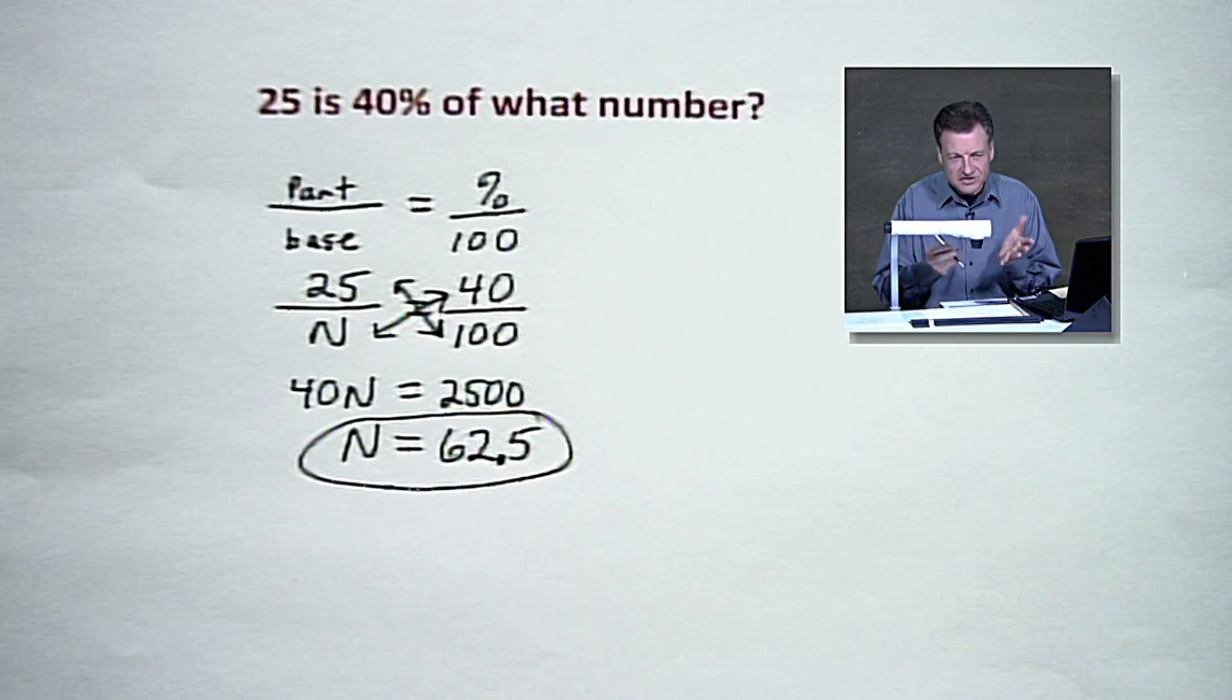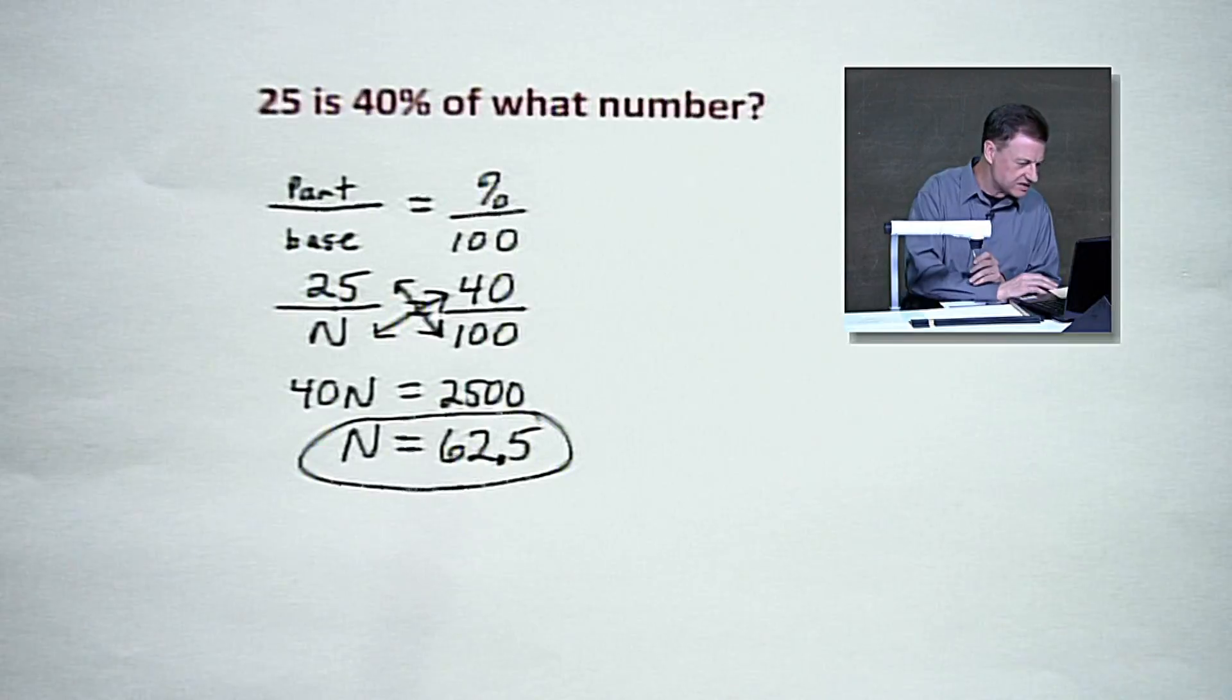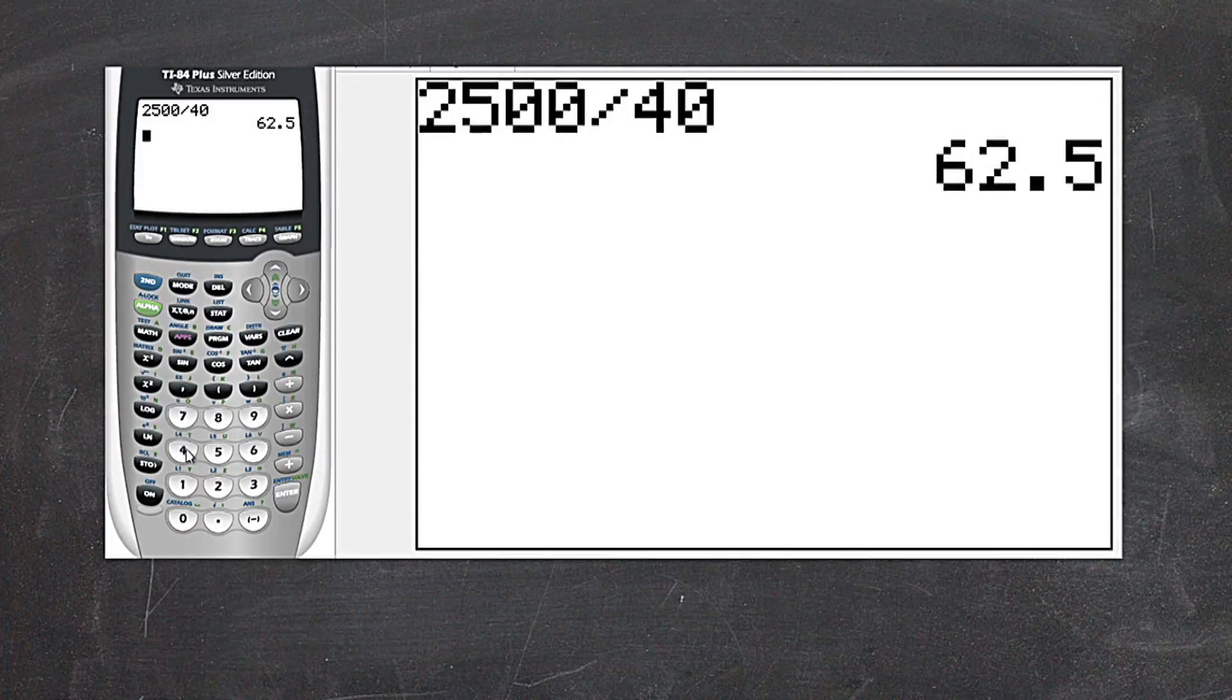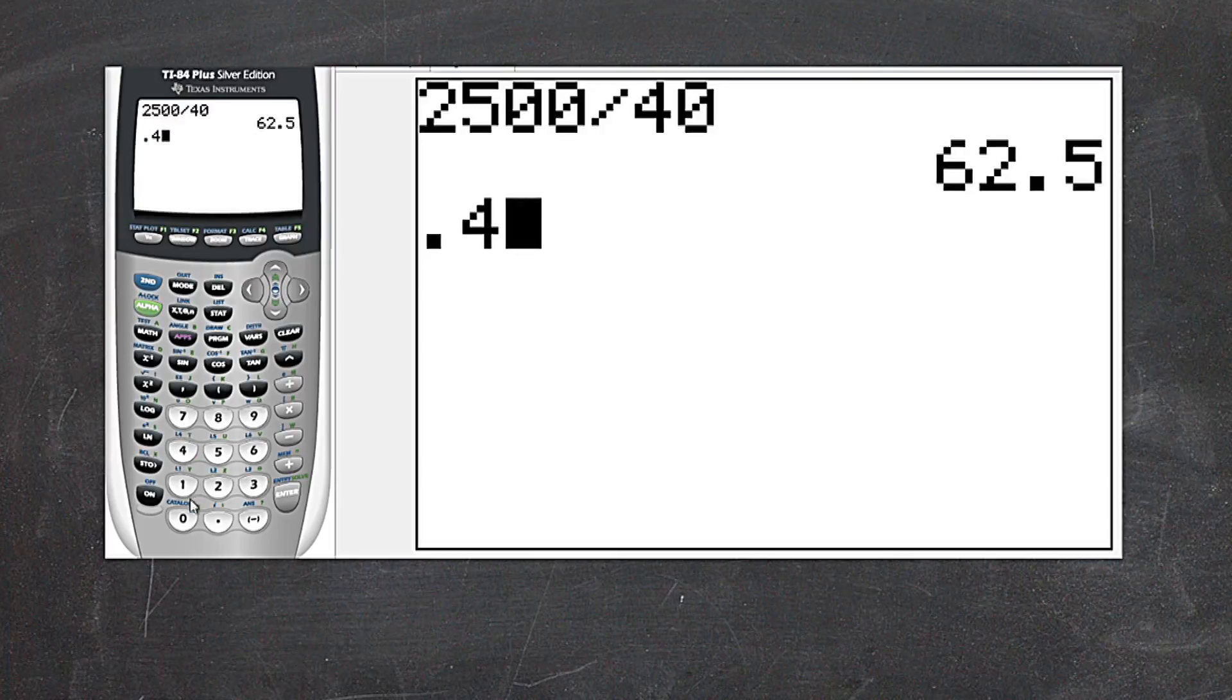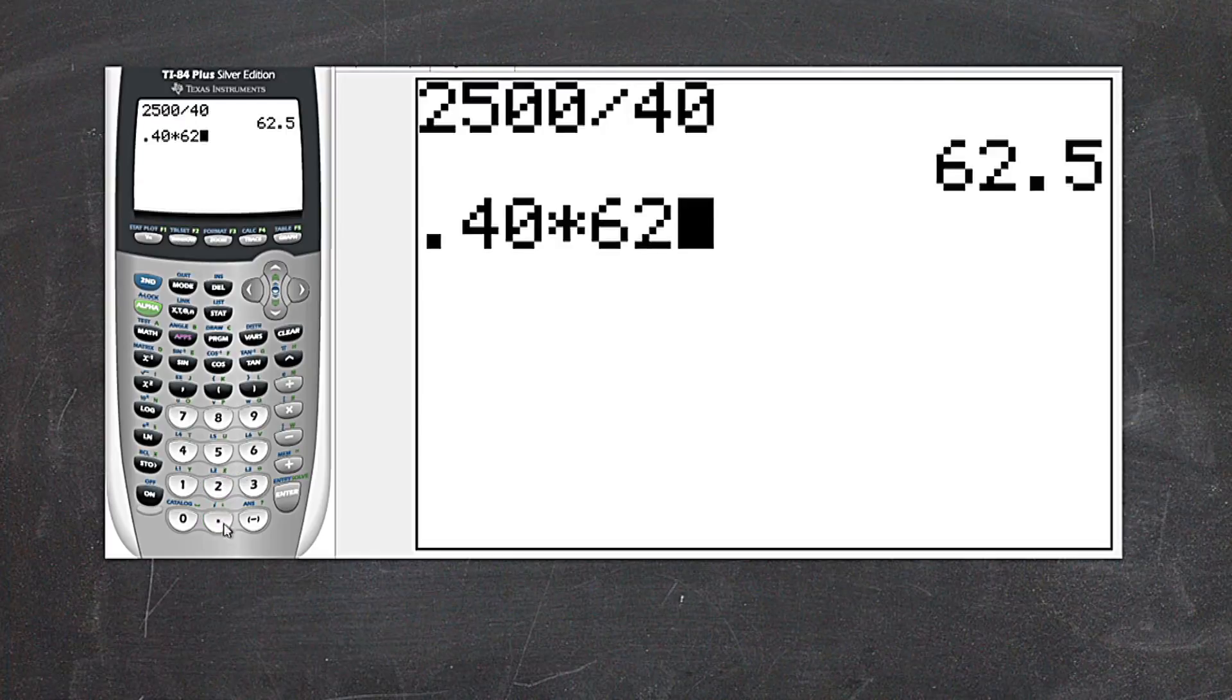Now, could we check it out? Let's check it out. Let's see what 40%. Let's go back to the calculator here. Take 40%, which I'm going to change to a decimal. It's .4, or 4 tenths. Some of you like to have the zero. It won't matter. And let's multiply that with 62 and a half and see where it takes us.